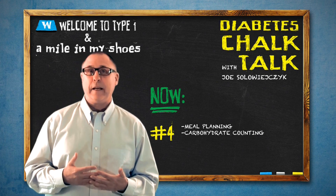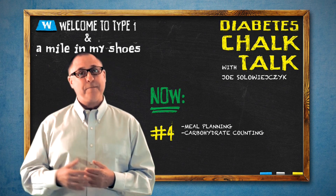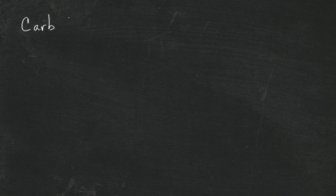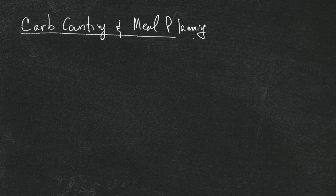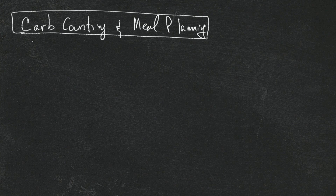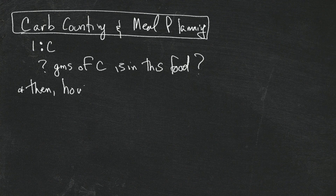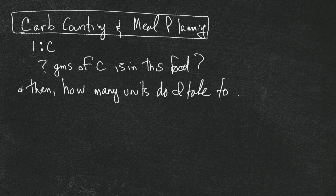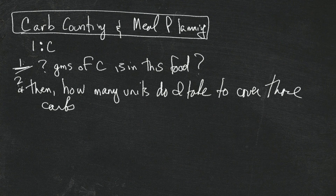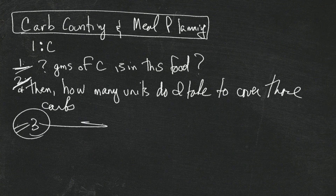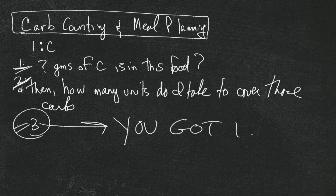Now we're going to talk about carb counting and meal planning — it is much easier than you think. If you've been paying attention up until now, you probably got a lot about what carb counting is about, because when we calculated the insulin-to-carb ratio, we were already talking about counting carbs. There are two components: how many grams of carb are in this food, and how many units do I take to cover those carbs. One plus two equals three — that's it.